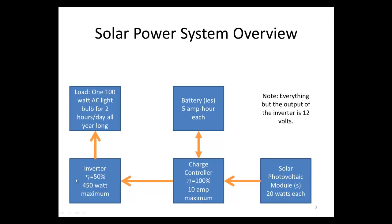Then we have an inverter. What an inverter does is take DC electricity and convert it to AC electricity, and it loses some electricity along the way. We're going to assume that our efficiency is 50%. Efficiency is labeled with the Greek letter eta. Whenever you see eta, think efficiency. Our inverter has a maximum power rating of 450 watts, so we'll have to take that into account.